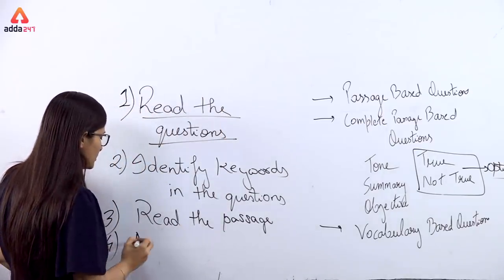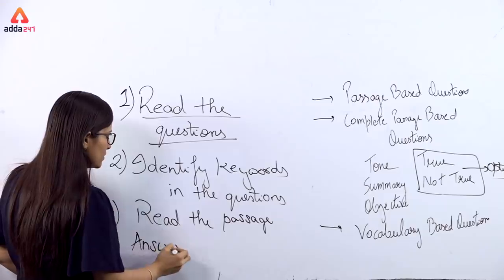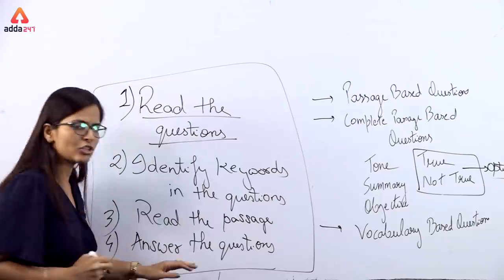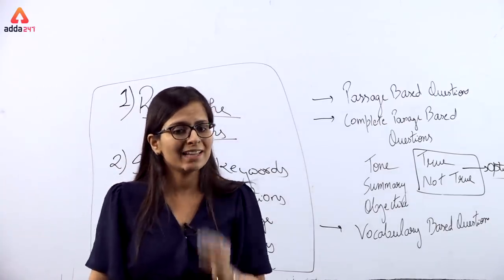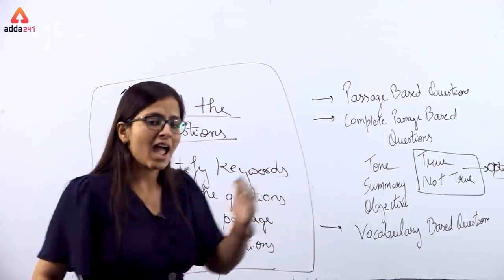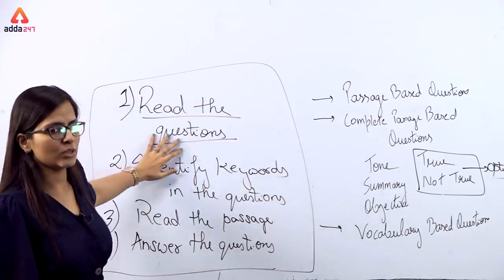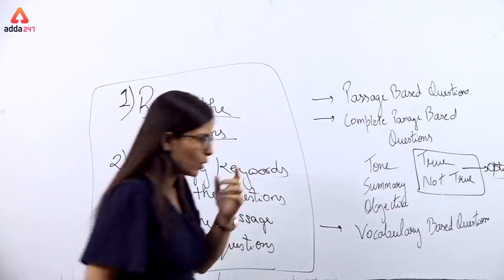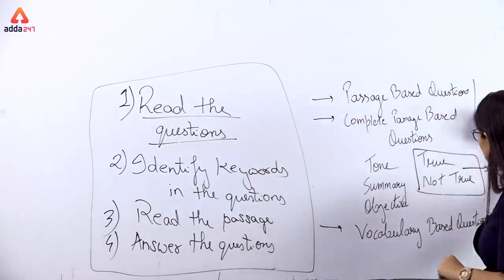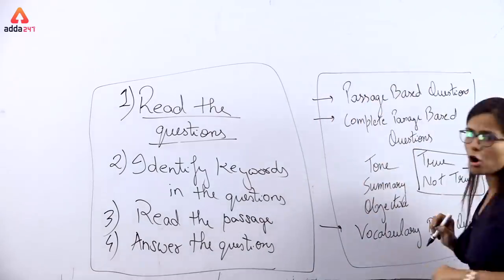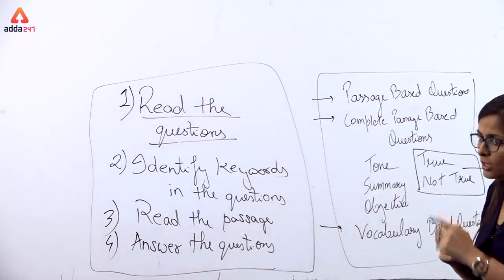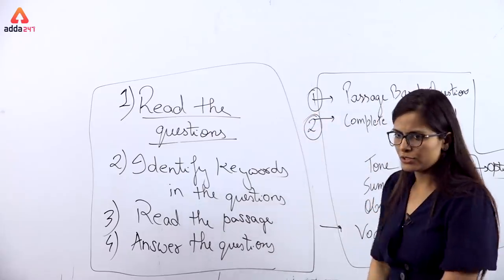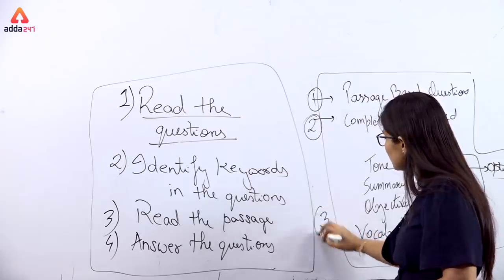Step four: answer the questions. If you follow these 4 steps in reading comprehension, it will really reduce a lot of time and you will answer all the questions accurately. Now, one question arises — which type of question should I attempt first? My suggestion is: first answer passage-based questions, then complete passage-based questions, and then vocabulary questions.